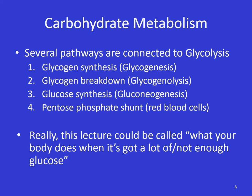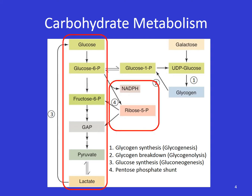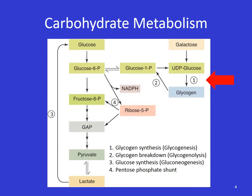Overall, this whole lecture could be called what your body does when it has a huge surplus or not enough glucose. Here's a pathway map showing pathways that we already know, and new ones we're going to talk about today. Starting with glucose all the way down to pyruvate is glycolysis. We also have the side pathway from pyruvate to lactate. In the middle surrounded by the red square is the pentose phosphate shunt, which generates NADPH. On the right-hand side, we have glycogen synthesis and breakdown — glucose-6-phosphate to glucose-1-phosphate to UDP glucose to glycogen.